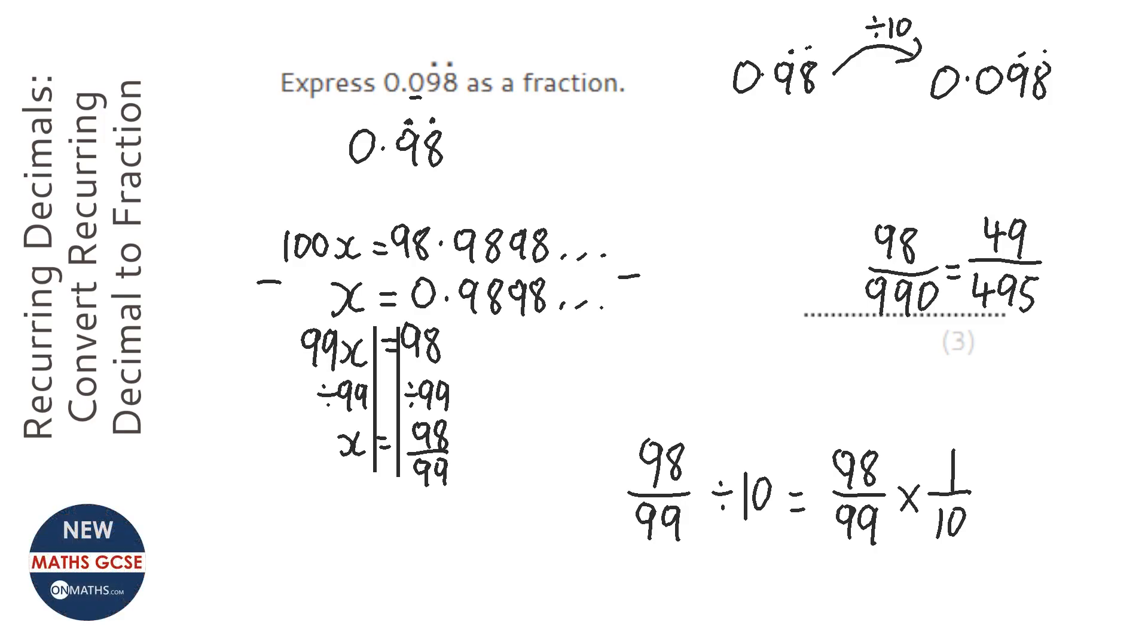Now 49 has 1, 49, and 7 as factors, and I don't believe 7 goes into 495. For the canceling of this, they're not normally that devious. And it will either be dividing top and bottom by 10 or dividing top and bottom by 2.